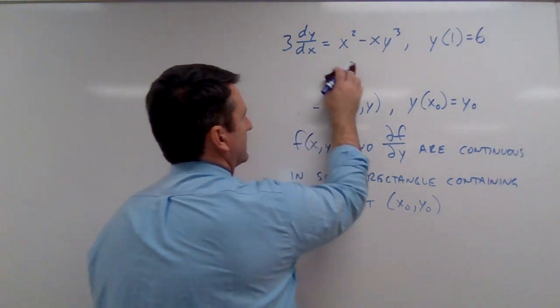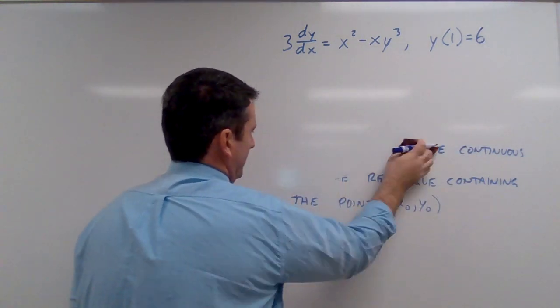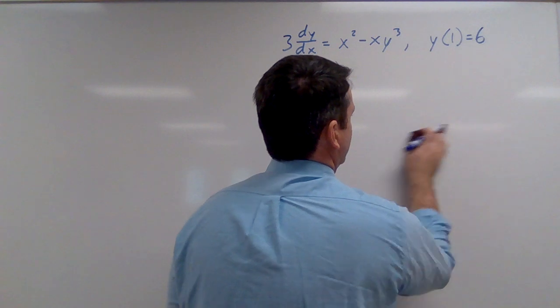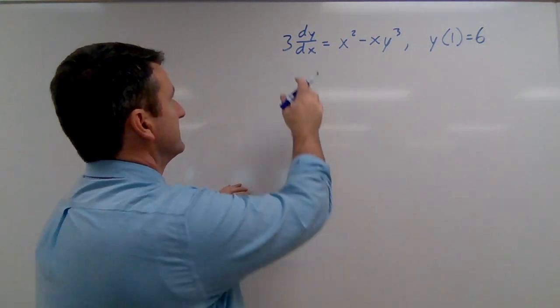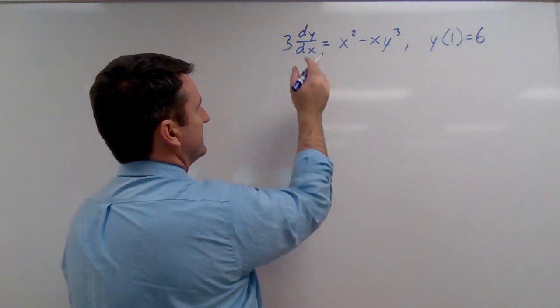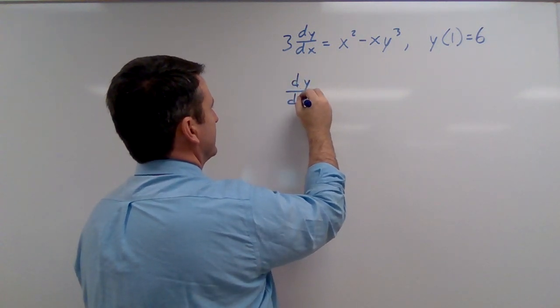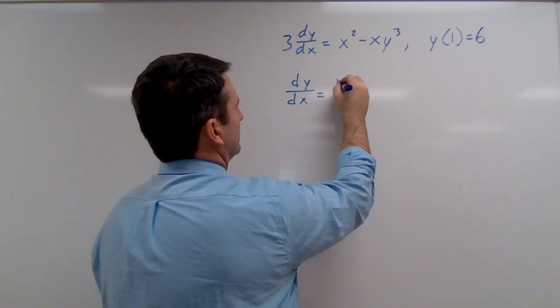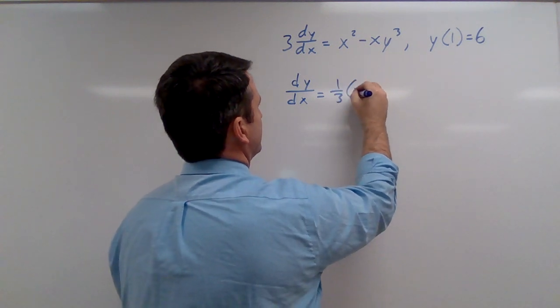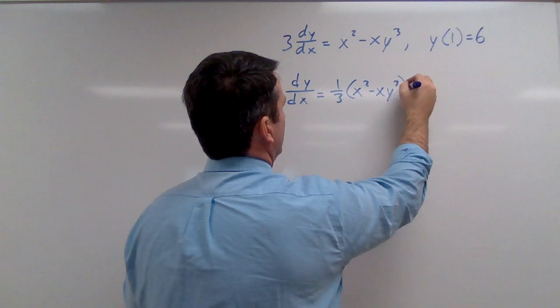Alright, so let's apply that to this initial value problem. Let's first put this in terms of dy/dx. So dy/dx is going to be equal to one third times x squared minus xy cubed.